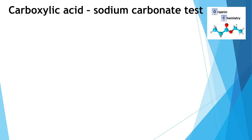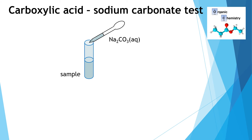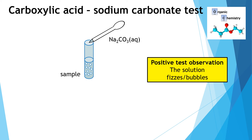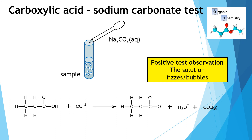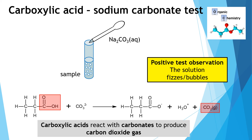A more definitive test for carboxylic acid is to add sodium carbonate. We can add sodium carbonate as an aqueous solution or as a solid. When added to the acid, it reacts and produces carbon dioxide. The observation we see is bubbles being produced — fizzing in the solution. A positive test for a carboxylic acid is to add sodium carbonate and observe fizzing or bubbles, because the carboxylic acid reacts with the carbonate to produce carbon dioxide gas.